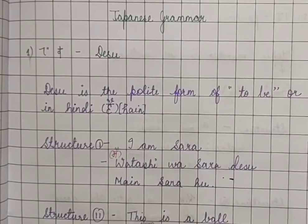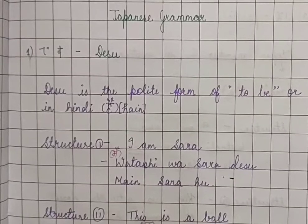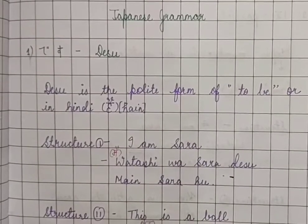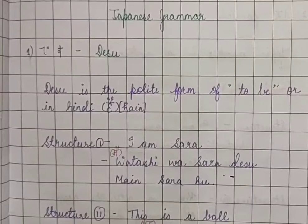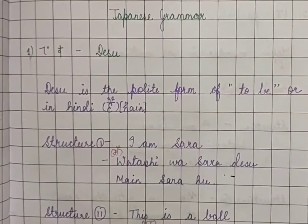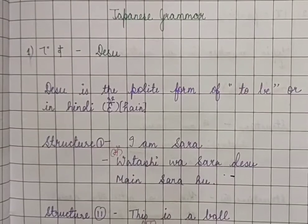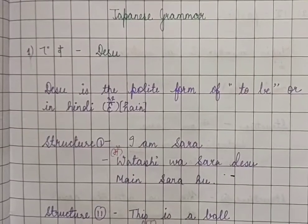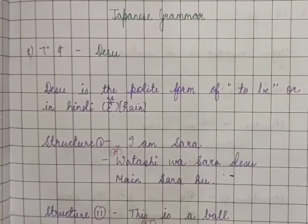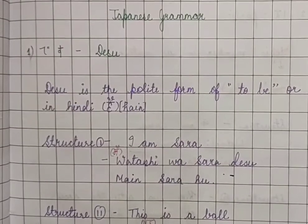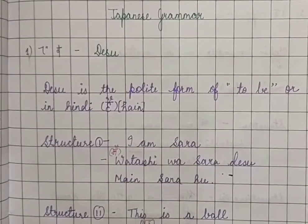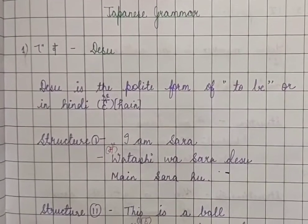Watashi means 'I.' So 'Watashi wa Sara desu' means 'I am Sara.' You can take another name also — it is easy, right? In one class only you will learn how to say your name. For example, if somebody's name is Aneel: 'Main Aneel hoon' in Hindi becomes 'Watashi wa Aneel desu' in Japanese. Simple as it is.